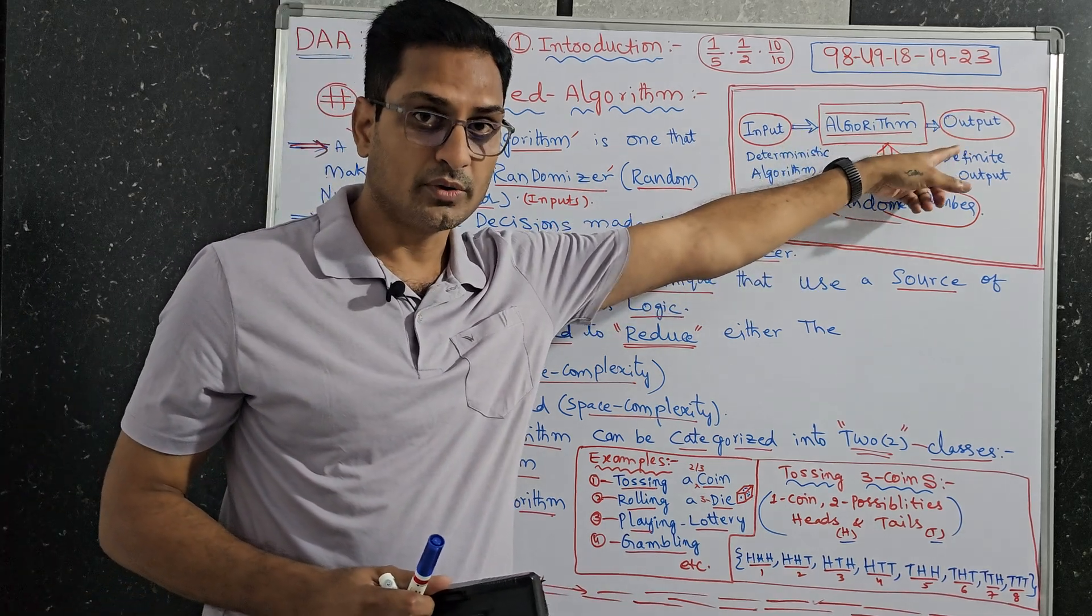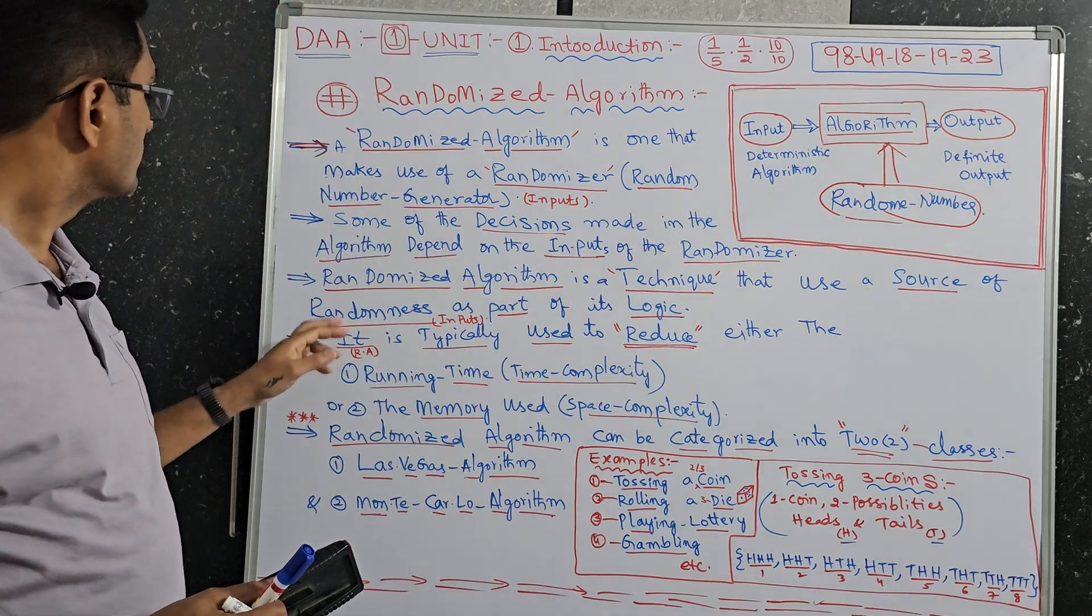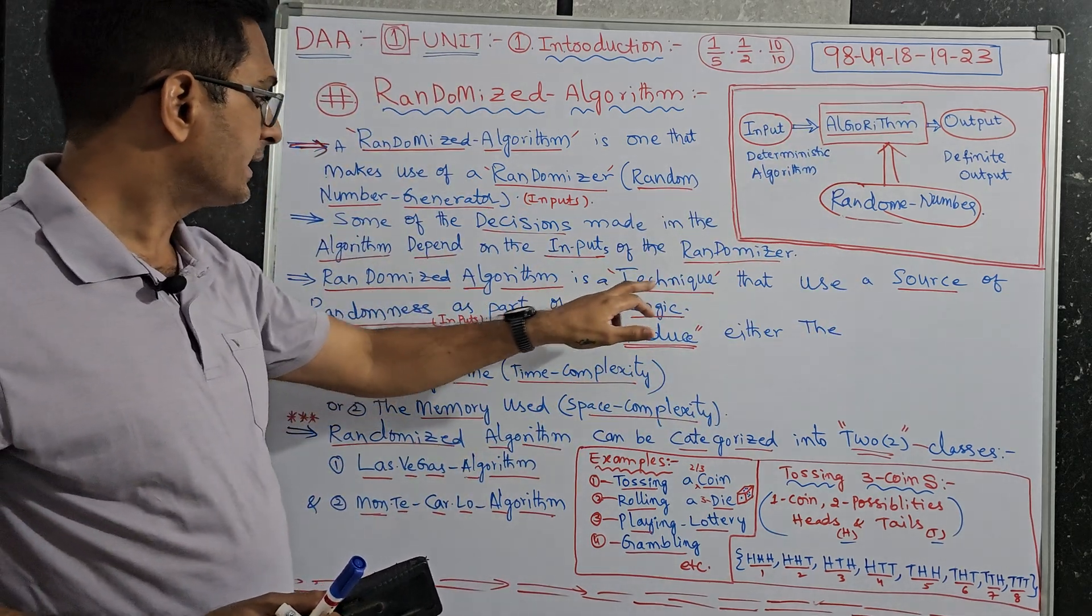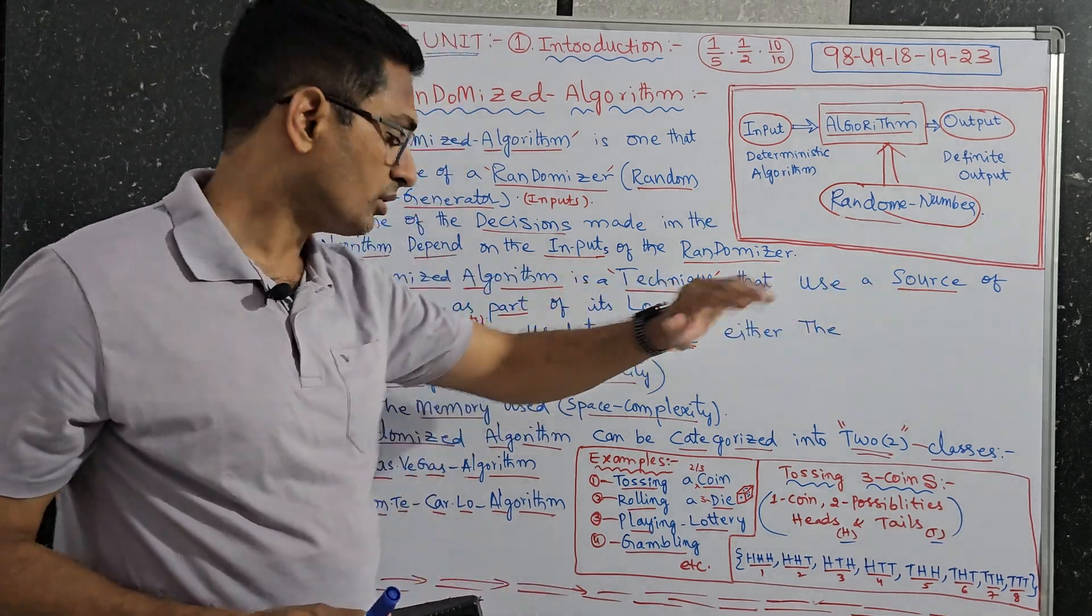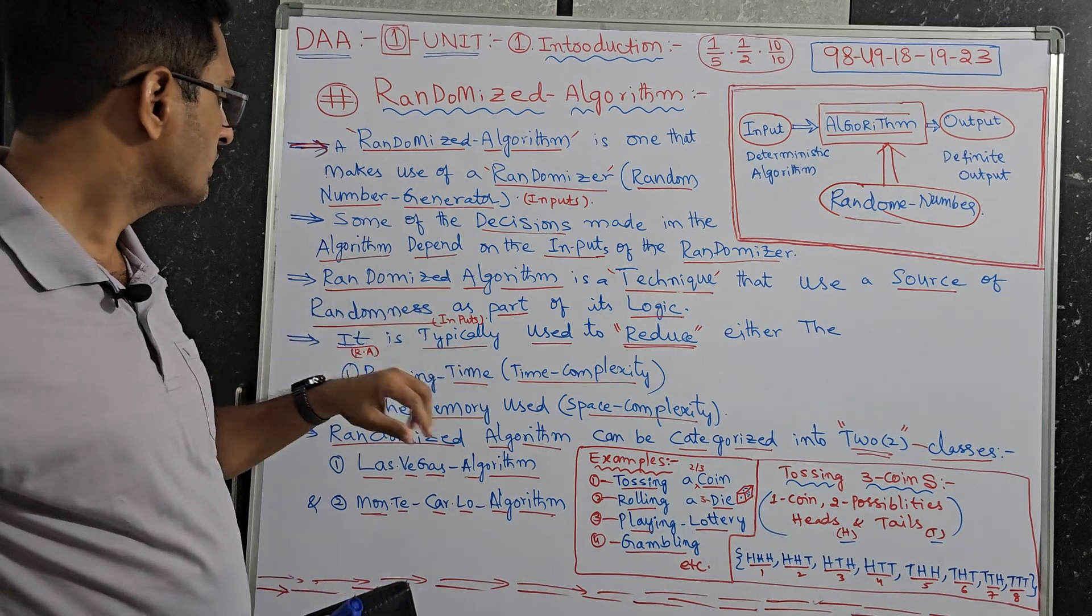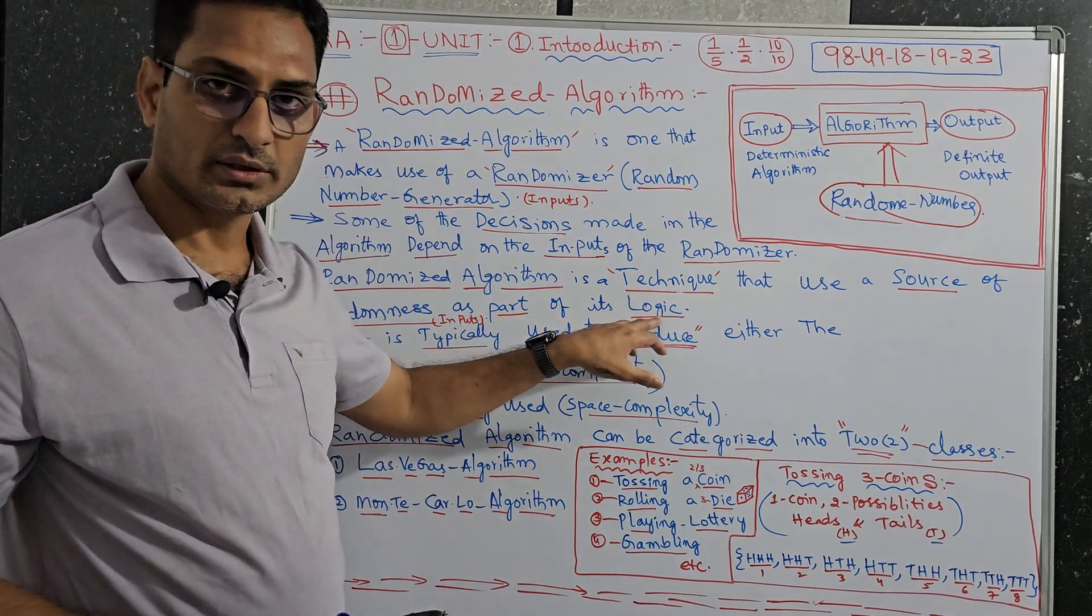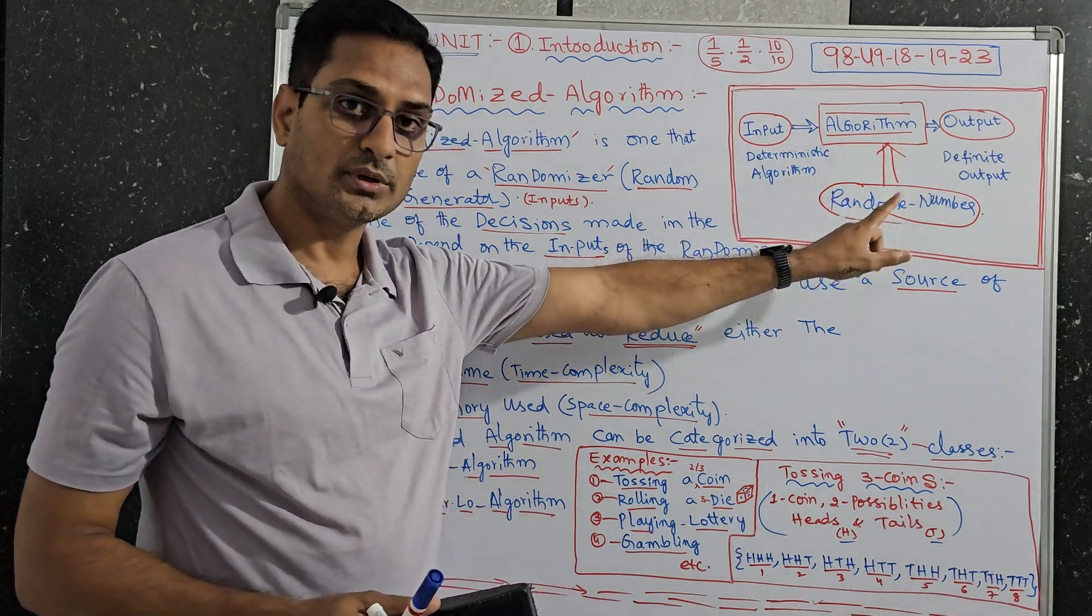Some of the decisions made in the algorithm depend on the inputs of the randomizer. Because of these randomizer, it has random inputs, random generator. So randomizer algorithm is a technique that uses source of randomizer, nothing but random inputs, as part of its logic.